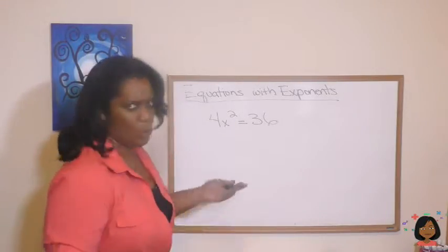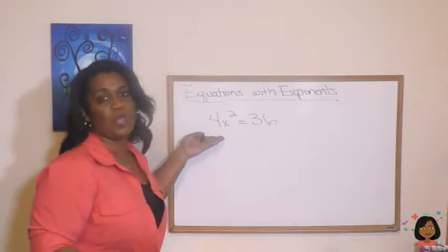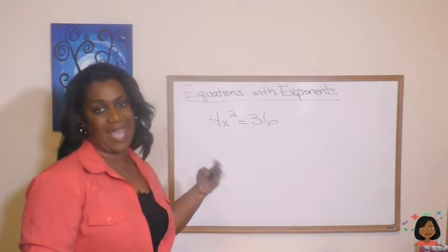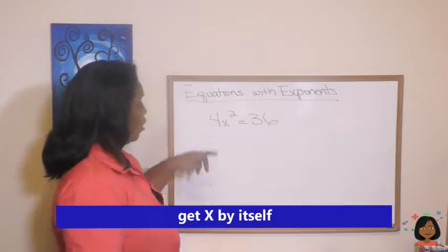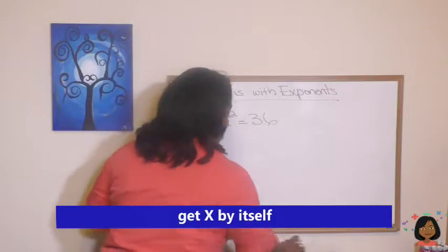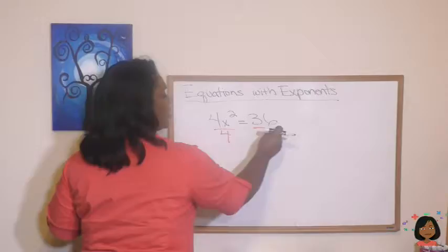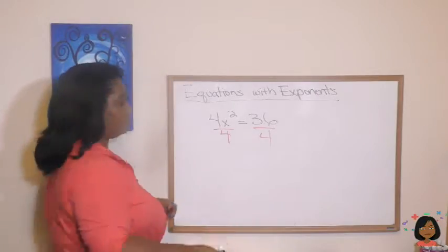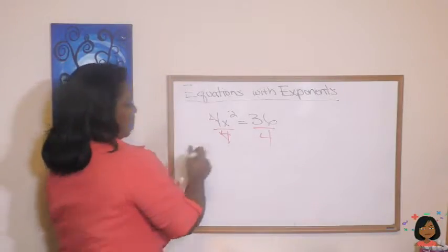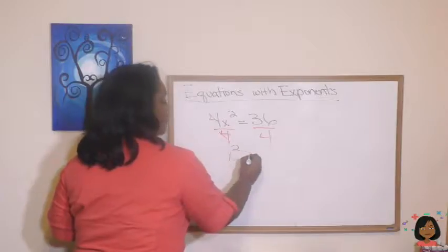What do we do? Well, you know the first thing we have to do is get the x by itself. So to get rid of our 4, we're going to divide by 4 on both sides. So we start just like we always would, and then simplify. On this side we are left with an x squared.